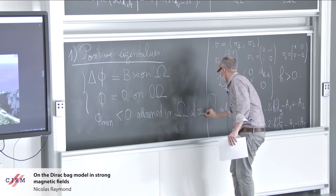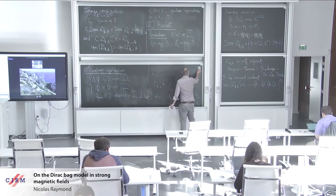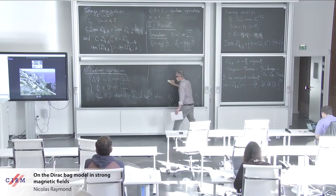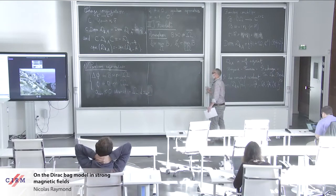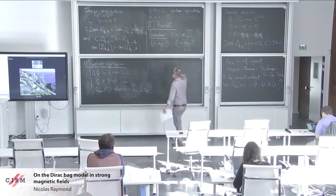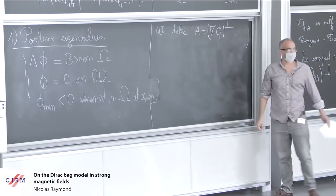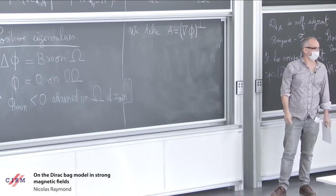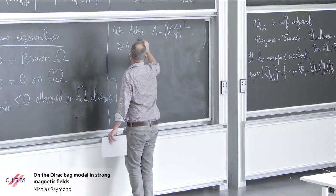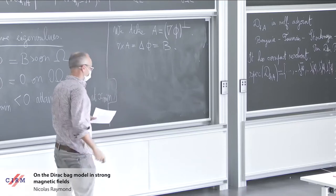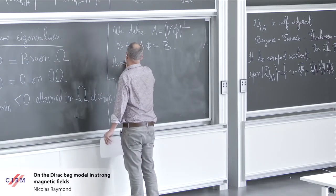Its minimum is called phi min. It's negative and it is obtained in omega at some point called x min. This phi is convenient. This is some kind of potential generating the magnetic field. We take as vector potential, by using the gauge invariance, we take this vector potential. I forgot to mention that omega is simply connected, so you are free to choose such a gauge. This is a convenient vector potential.